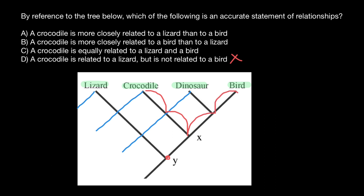Now let's find how many such periods we have between crocodile and lizard. How many periods separate crocodile and lizard? One, two, three, four, five, and six.